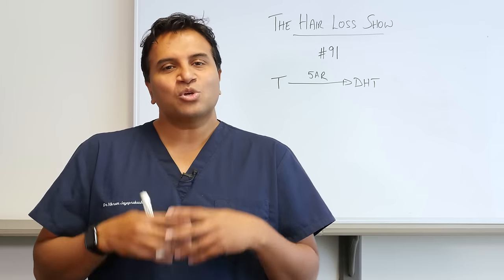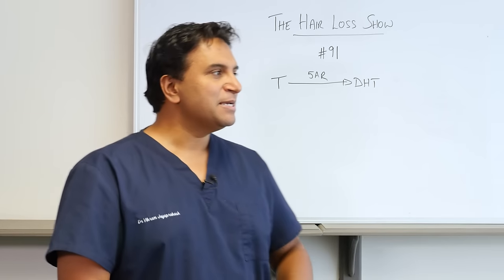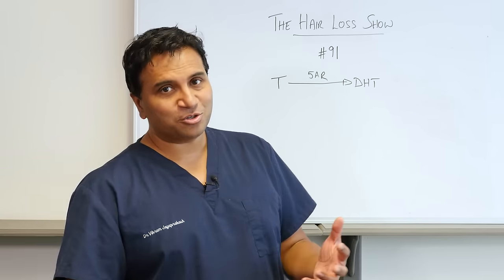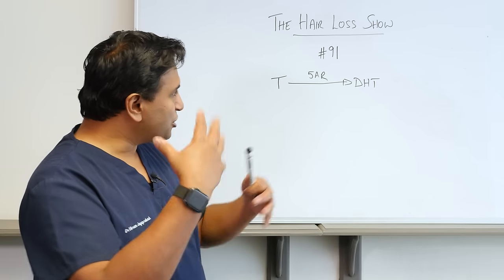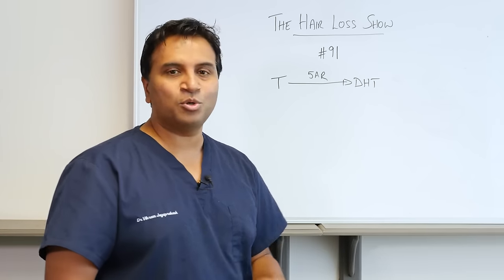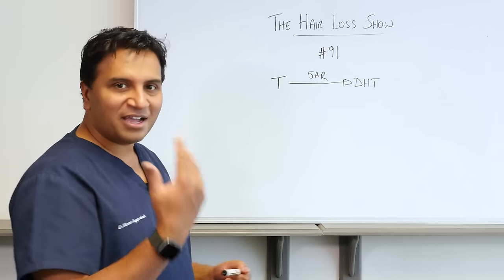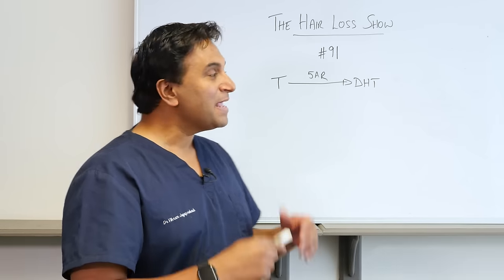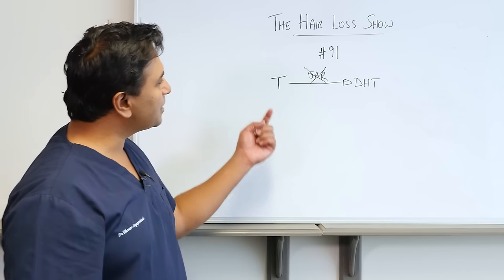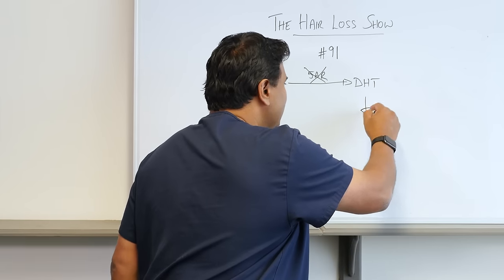Let's talk about finasteride real quick. If we look at male pattern hair loss or androgenic alopecia, there's a genetic cause, but you've got a hormone testosterone that gets converted into another form of that hormone, dihydrotestosterone, by the 5-alpha reductase enzyme. Essentially what finasteride does is it blocks that enzyme. If you block that enzyme, you block the conversion of testosterone to DHT and therefore lower DHT in the system.